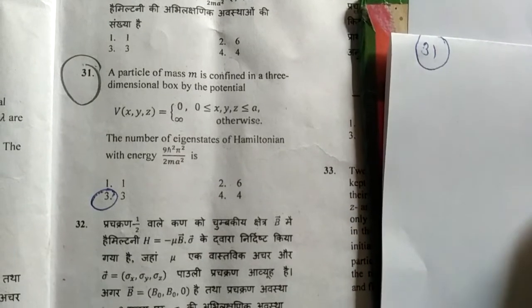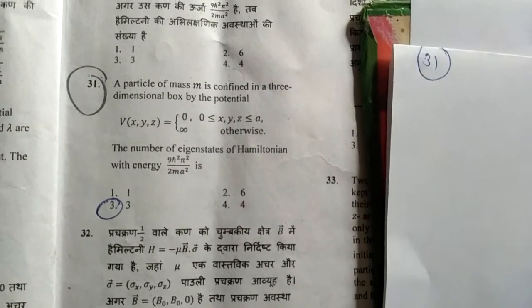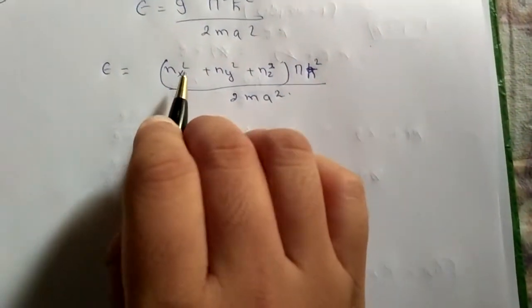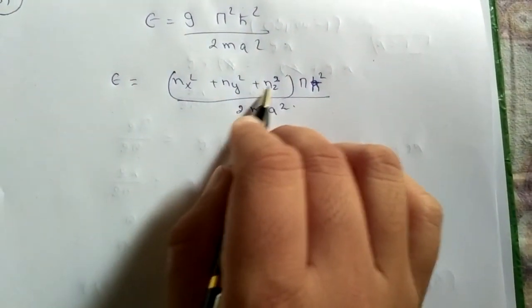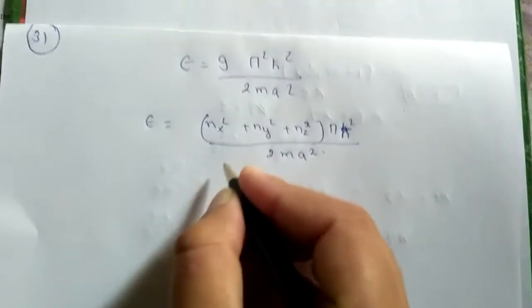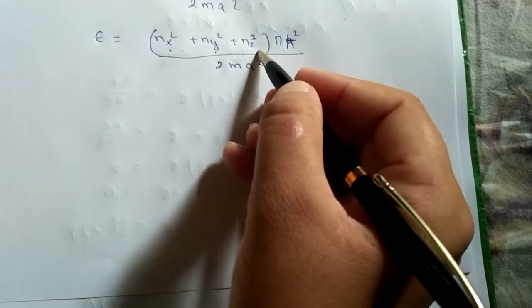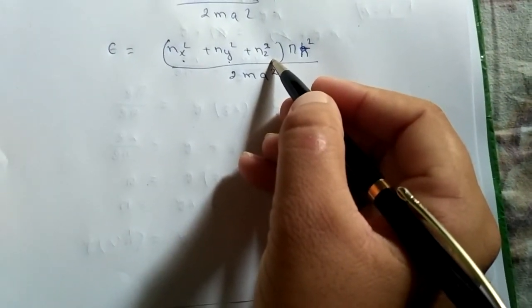9 pi square h cut square by 2ma square is equal to nx square plus ny square plus nz square by 2ma square pi h cut square. For this, we have nx, ny, and nz which are the state levels whose value starts from 1.